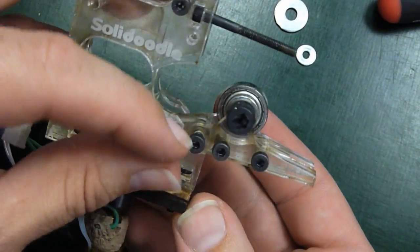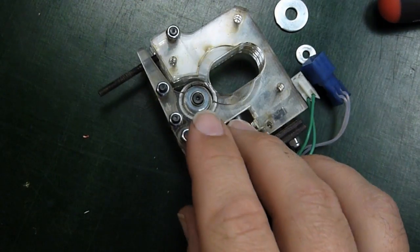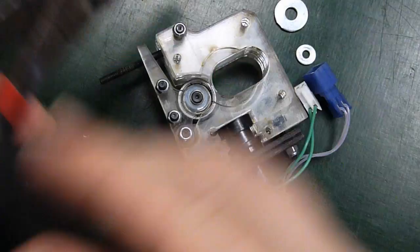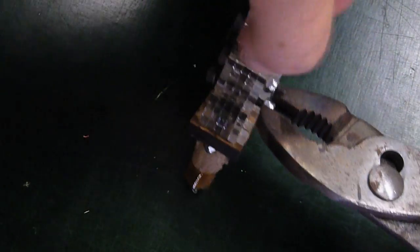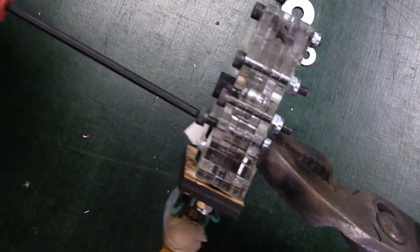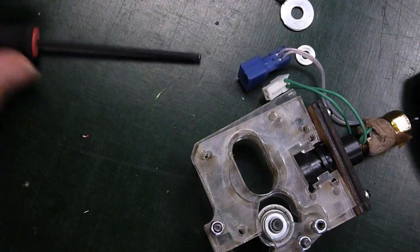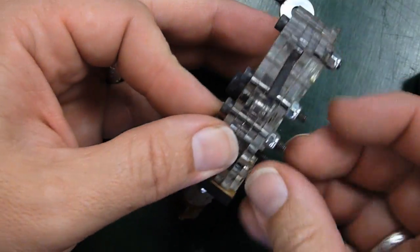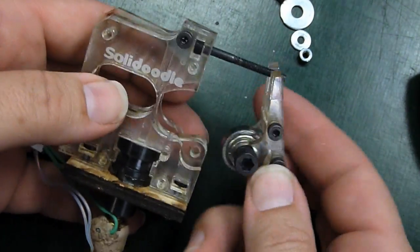I just need to get this screw off to be able to take the arm out. This one has a nut behind it. Okay, I've got that one free.